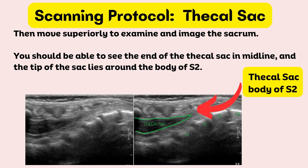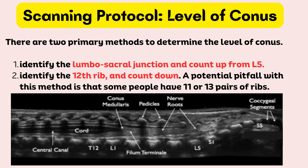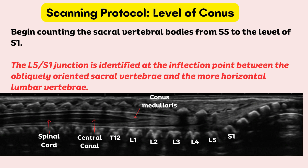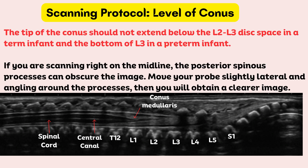Then move superiorly to examine and image the sacrum. You should be able to see the end of the thecal sac in midline, and the tip of the sac lies around the body of S2. Next, we need to determine the level of the conus. There are two primary methods: the first is to identify the lumbosacral junction and count up from L5; the second is to identify the 12th rib and count down. Begin counting the sacral vertebral bodies from S5 to the level of S1. The L5-S1 junction is identified at the inflection point between the obliquely oriented sacral vertebrae and the more horizontal lumbar vertebrae.